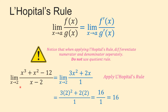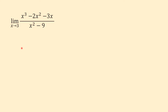Another method for evaluating this limit is factoring, but it is harder and takes more time. For another example, we want to find the limit of (x³ − 2x² − 3x) over (x² − 9) as x approaches 3.